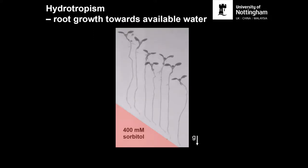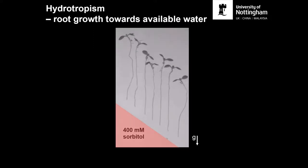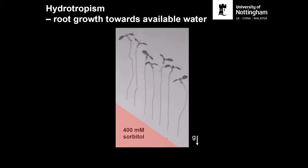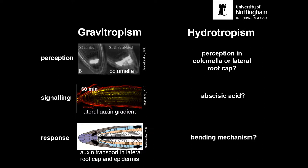For gravitropism, we know that perception is in the columella, you get a lateral auxin gradient, and increased transport of auxin through the lateral root cap and epidermis towards the elongation zone, which shapes root growth so that the root bends downward. For hydrotropism, until very recently we knew a lot less. There was some data that perception in the columella or lateral root cap might be taking place; it was known that ABA is involved in the response, but not exactly how, and very little was known about the actual bending mechanism.